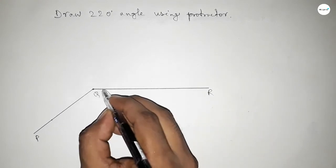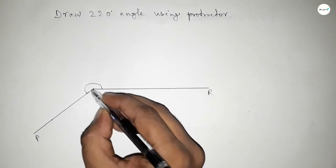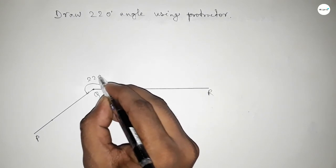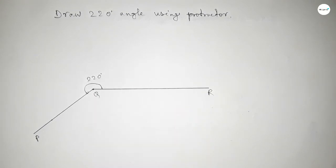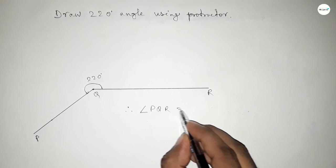This is PQR, so angle PQR, and this is 220 degrees. Therefore, angle PQR equals 220 degrees.